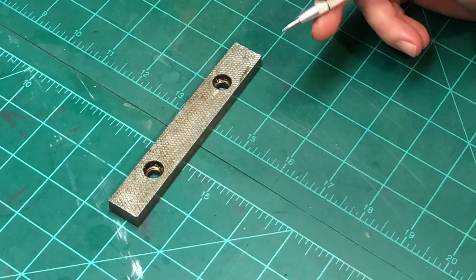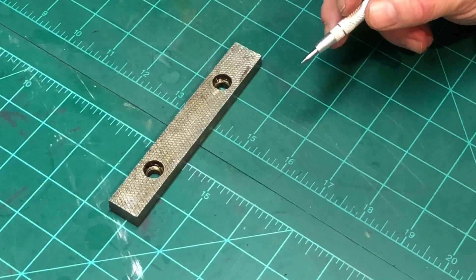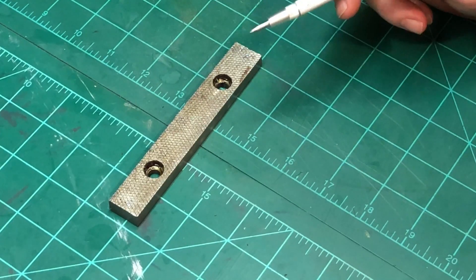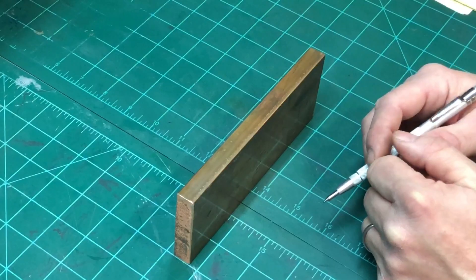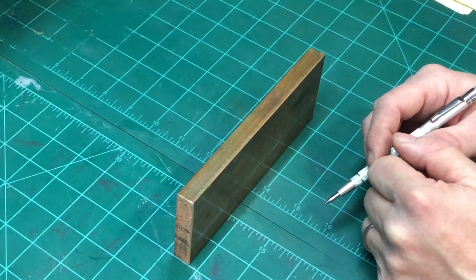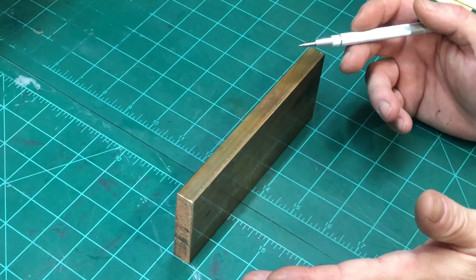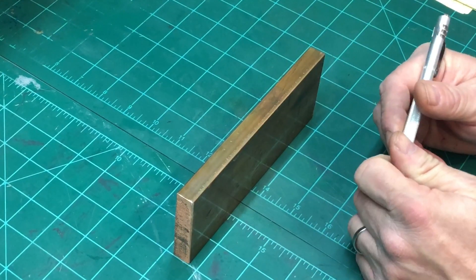One day not too long ago I ran across Quinn from Blondie Hacks. She was making a set of copper jaws for her vice and I thought now that is the ticket, cricket. Quinn pointed out in her video that milling copper is challenging, so before I set out to make chips I researched the topic within an inch of its life.